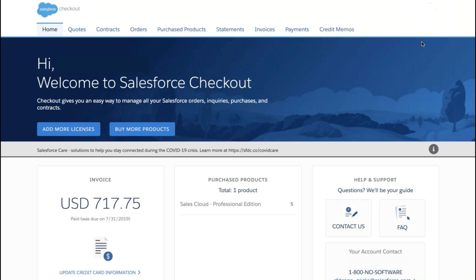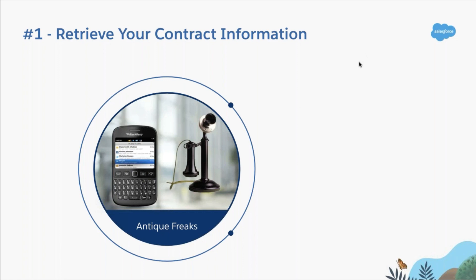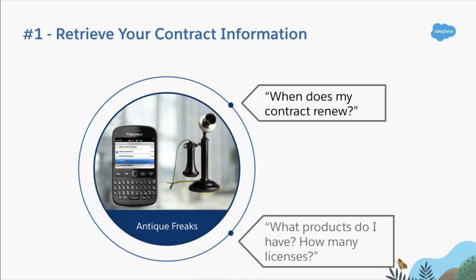Now that we've made our way to Salesforce Checkout and familiarized ourselves with the homepage, let's look at three of the most common situations you might use Checkout for. You joined ROHANA as a Sales Cloud customer in 2019. You think it was around May, but can't remember if Jill from sourcing signed a one, two, or three-year contract. Your business, Antique Freaks, has been taking off, and you want to plan your Salesforce budget for the year. You need to know the contract renewal date and how many licenses you have.